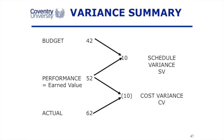If the earned value was, for instance, £52,000, then our schedule variance is the difference between the earned value and the budget: plus £10,000. And the cost variance is the difference between the earned value and the actual: negative £10,000. So reporting on a project that says you've actually spent £62,000 and the plan was £42,000 doesn't tell you how much work you've achieved. Saying the schedule variance is £10,000 positive — I'm ahead of schedule — but I'm a little overspent, £10,000 negative, sounds a much better situation.